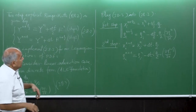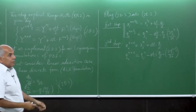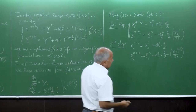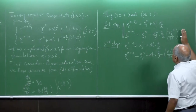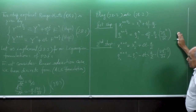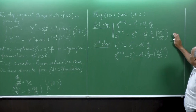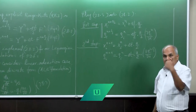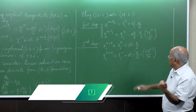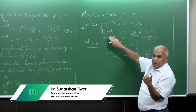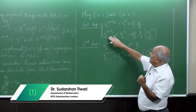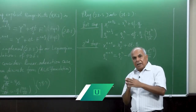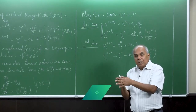So now, what is the difference from the explicit Euler? Now we have to do the computation of the derivative two times. First time for the first step, and then we have a new position — the particle moves for delta_t/2.